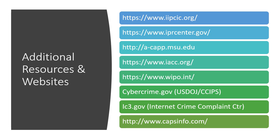Cybercrime dot gov is the Department of Justice Computer Crimes and Intellectual Property section — they have a lot of great resources. Also look at the Internet Crime Complaint Center run by the FBI, and capsinfo.com, which represents Major League Baseball, NHL, NBA, and other sports organizations dedicated to stopping counterfeiting, piracy, and intellectual property violations. They're very aggressive, and conduct both physical and online investigations.